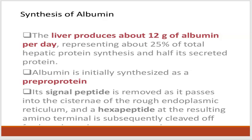Regarding the synthesis of albumin: albumin is exclusively synthesized by the liver. The liver produces about 12 grams of albumin per day, representing about 25 percent of total hepatic protein synthesis and half of its secreted proteins. It is initially synthesized as a pre-protein; its signal peptide is removed as it passes into the cisternae of the rough endoplasmic reticulum, and a hexapeptide at the resulting amino terminal is subsequently cleaved off.